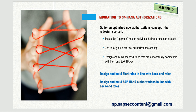In the greenfield approach, you start with process definition first, then do the technical work. You are essentially going for a security redesign and building roles that conceptually meet your Fiori, SAP HANA database requirements and strategy. You run your ECC system in parallel while implementing S4HANA with a new security model.